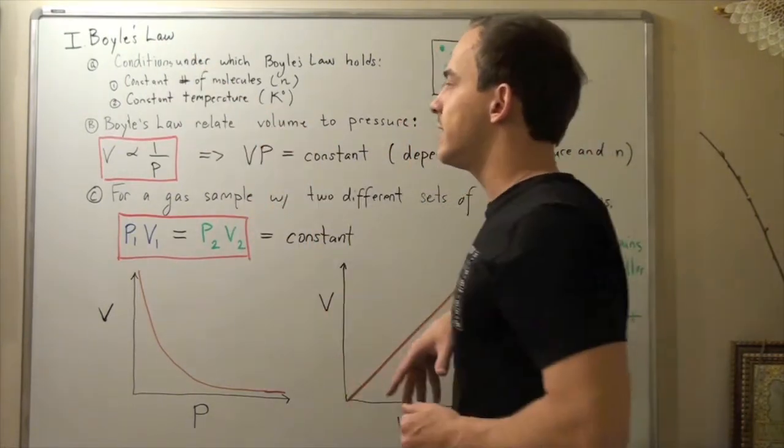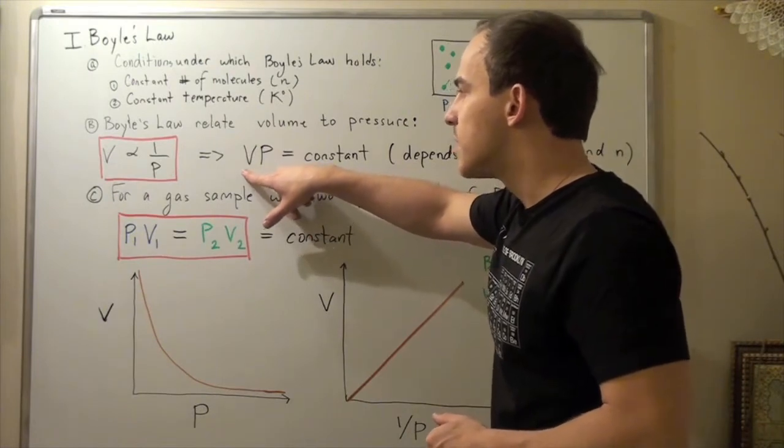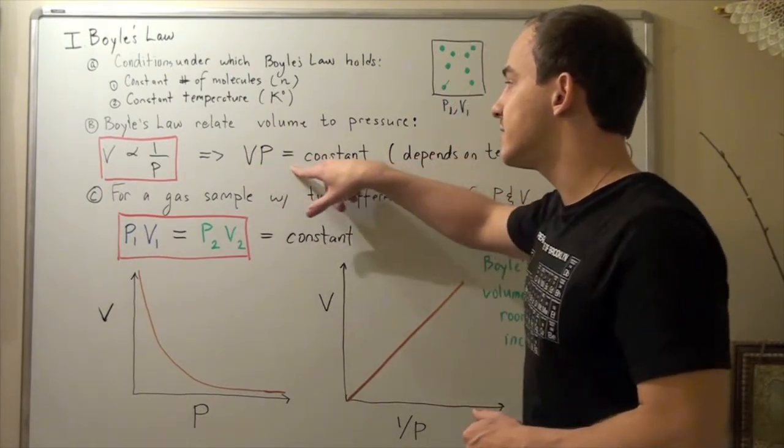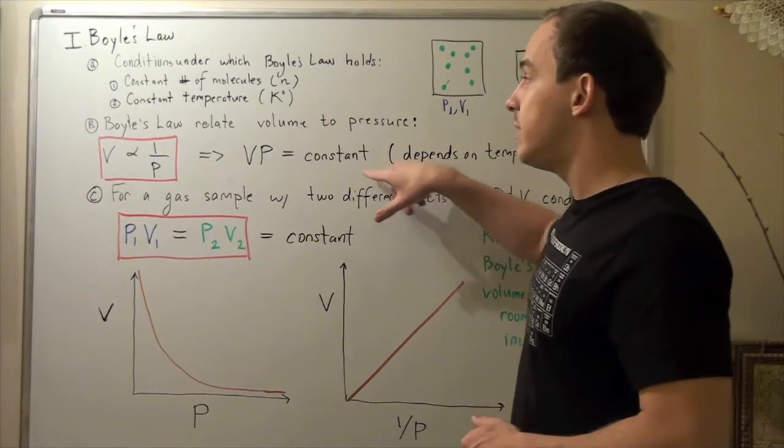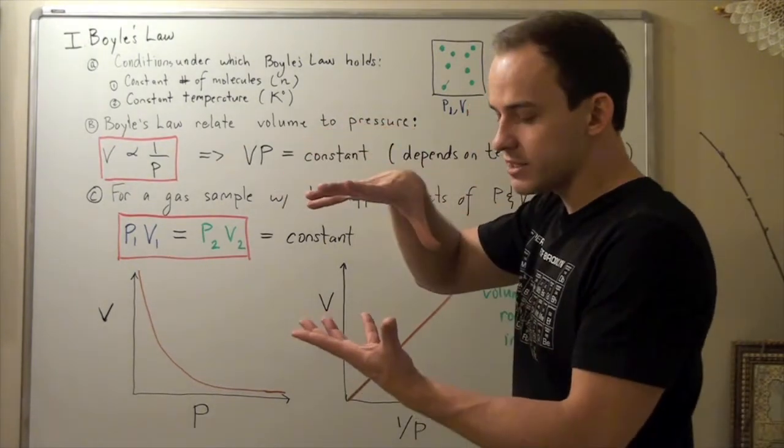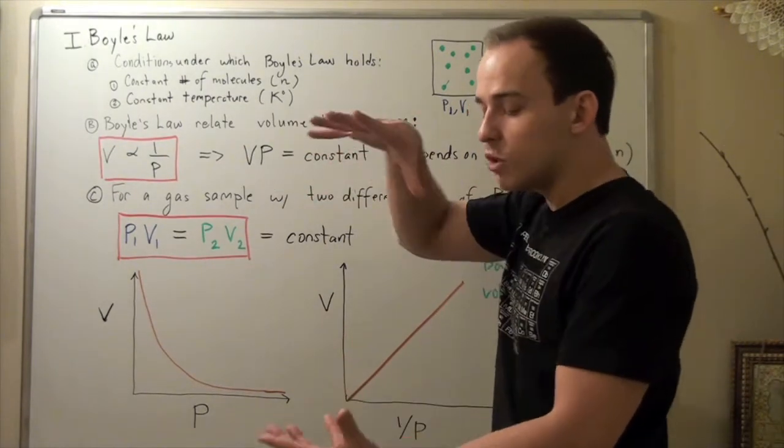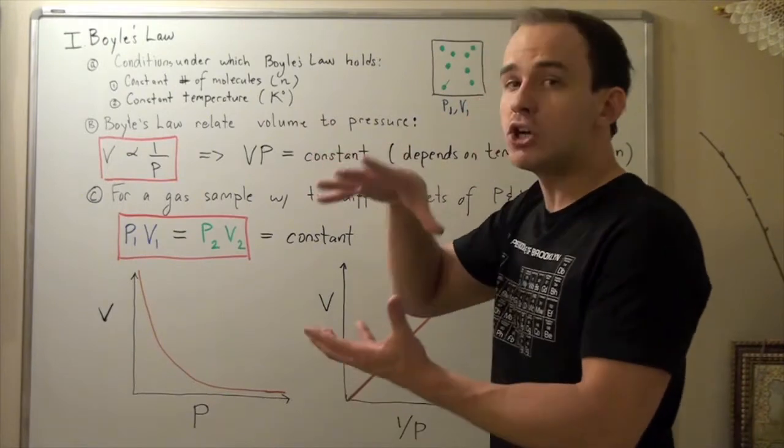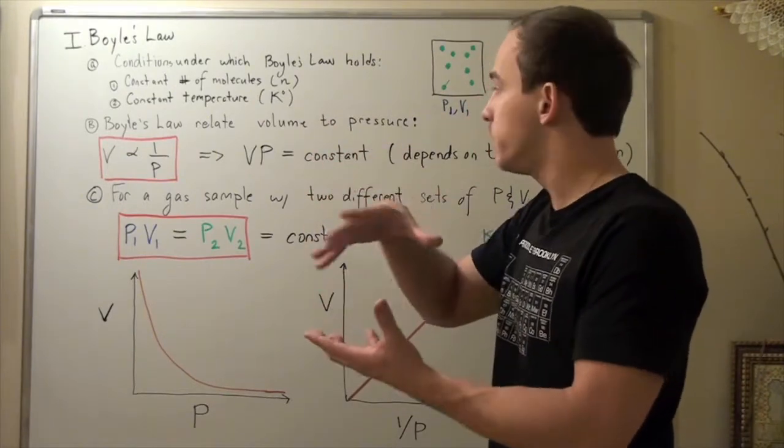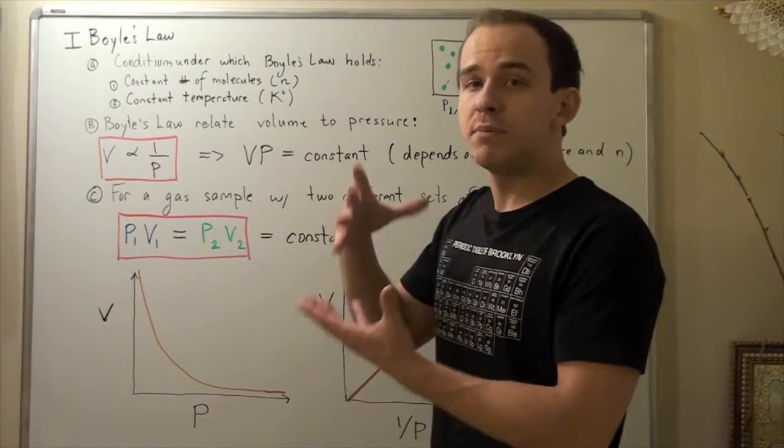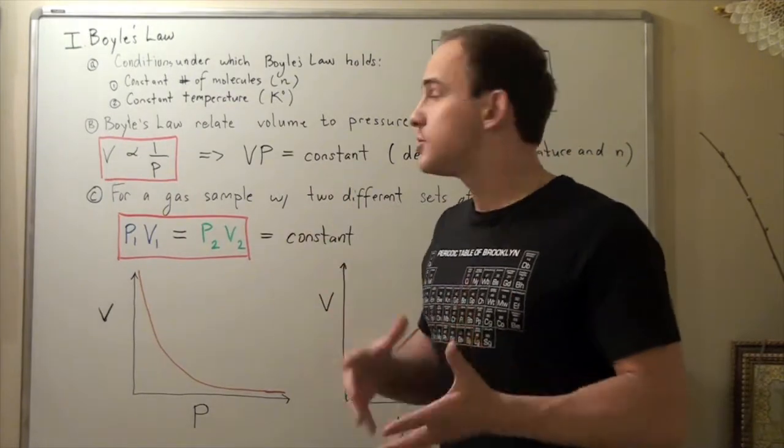Boyle's law states that if you decrease volume, pressure must increase because our constant remains the same. And that means pressure will begin to increase and the ball or the balloon will pop when the pressure is large enough for it to burst open and pop. And that's exactly why a balloon, when squeezed, will eventually pop.